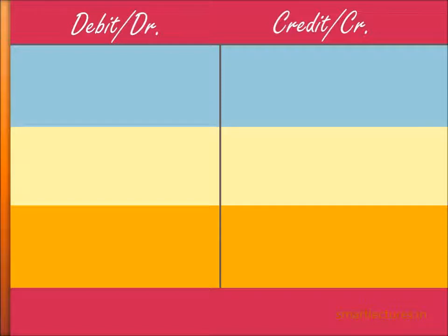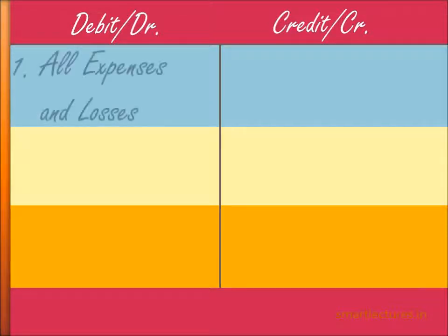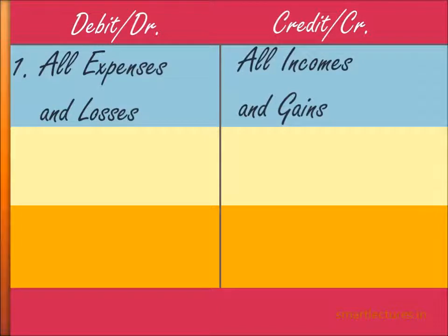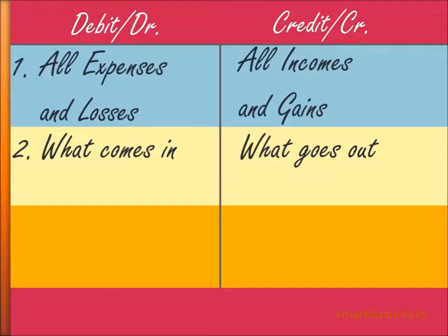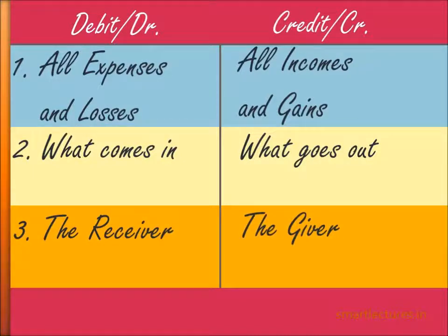On the debit side (left side): Number one, debit all expenses and losses — if there is any expense or loss in the firm, it should be debited. On the credit side, all incomes and gains — if there is any income or gain, it should be credited. Number two, on the debit side: debit what comes in — if anything comes into the firm, it will be debited. On the credit side: credit what goes out — if anything goes out of the firm, it will be credited. Number three, on the debit side: the receiver should be debited. On the credit side: the giver should be credited.